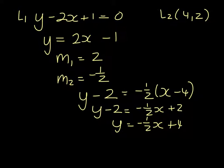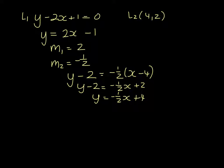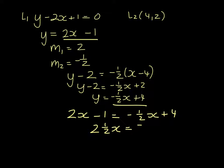Finally, what we want to do is the point of intersection, and that's going to happen when this is equal to this. So when 2x minus 1 equals minus 1 half x plus 4. So 2 and a half x equals 5.